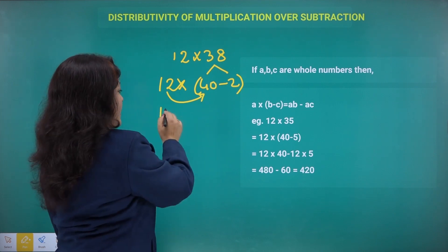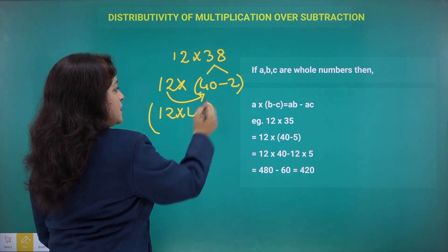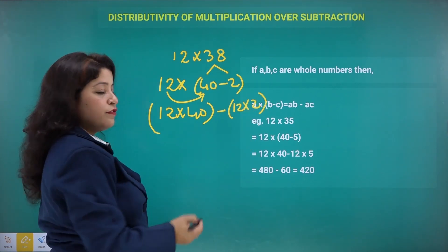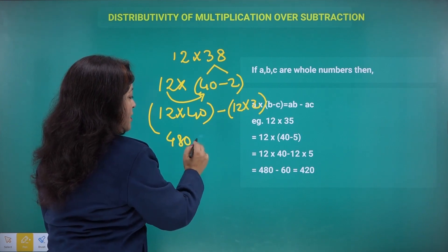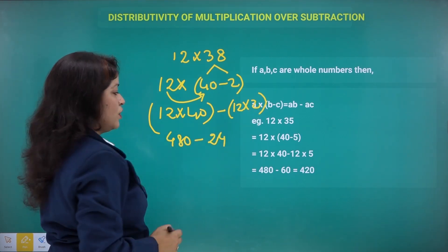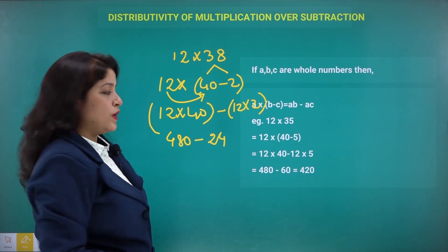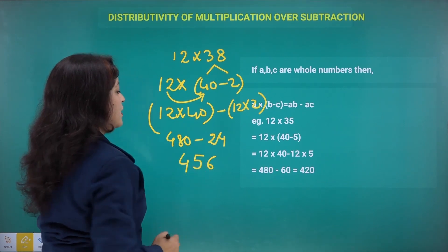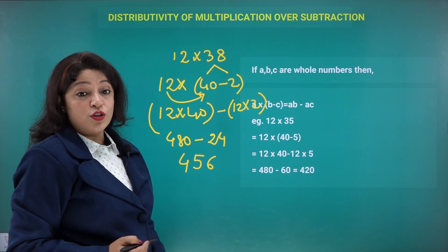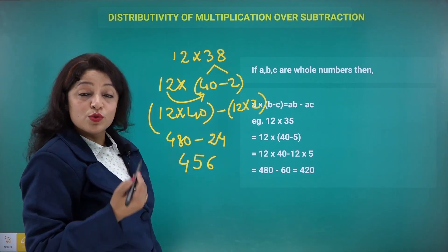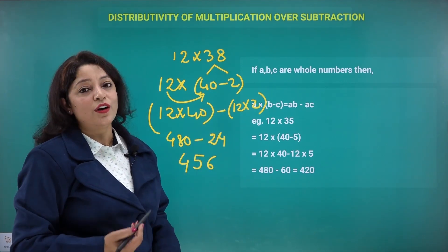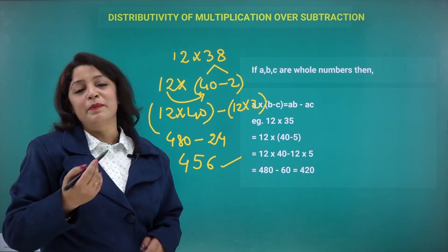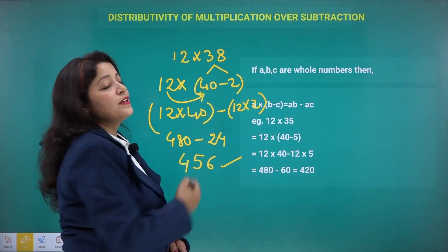So for 12 multiplied by 38, we write 38 as 40 minus 2. Then 12 times (40 − 2) gives 12 times 40 minus 12 times 2, which is 480 minus 24 = 456. You can cross-check using the column multiplication method from junior classes and you'll get the same result — same answer but using the distributive property over subtraction.